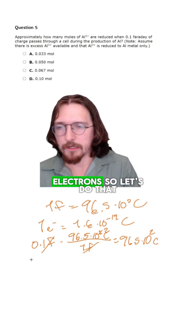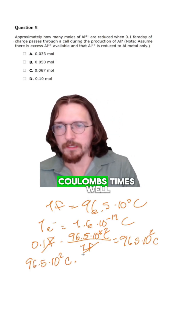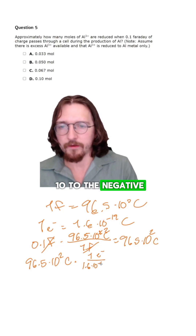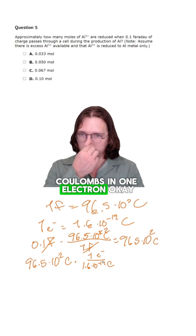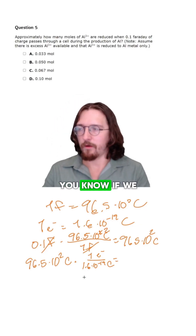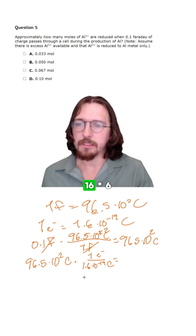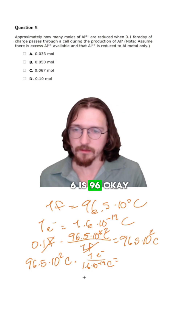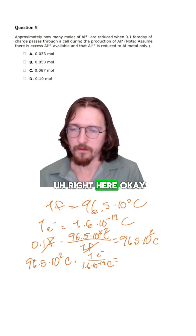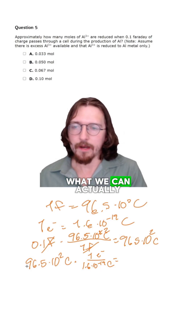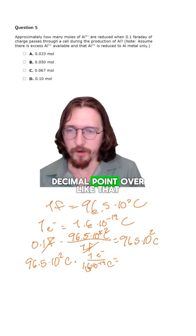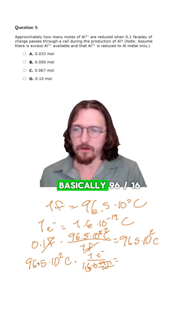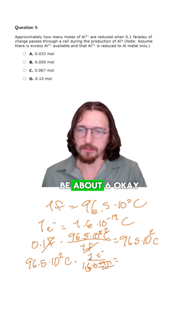Now we want to convert coulombs to electrons. We want electrons at the top, and we know that there is 1.6 times 10 to the negative 19 coulombs in one electron. If we multiply 1.6 by 10 it's 16, and 16 times 6 is 96. So we can see that 96 appears here. Moving the decimal point over turns this into 10 to the negative 20, and 96 divided by 16 is about 6.